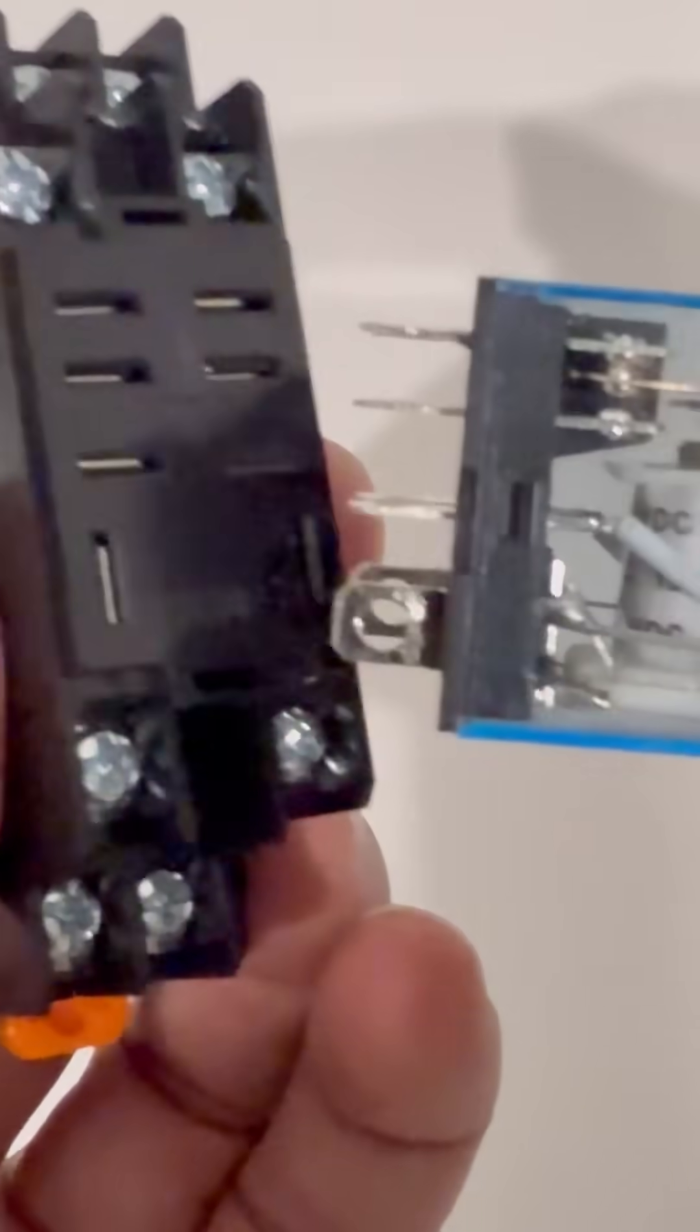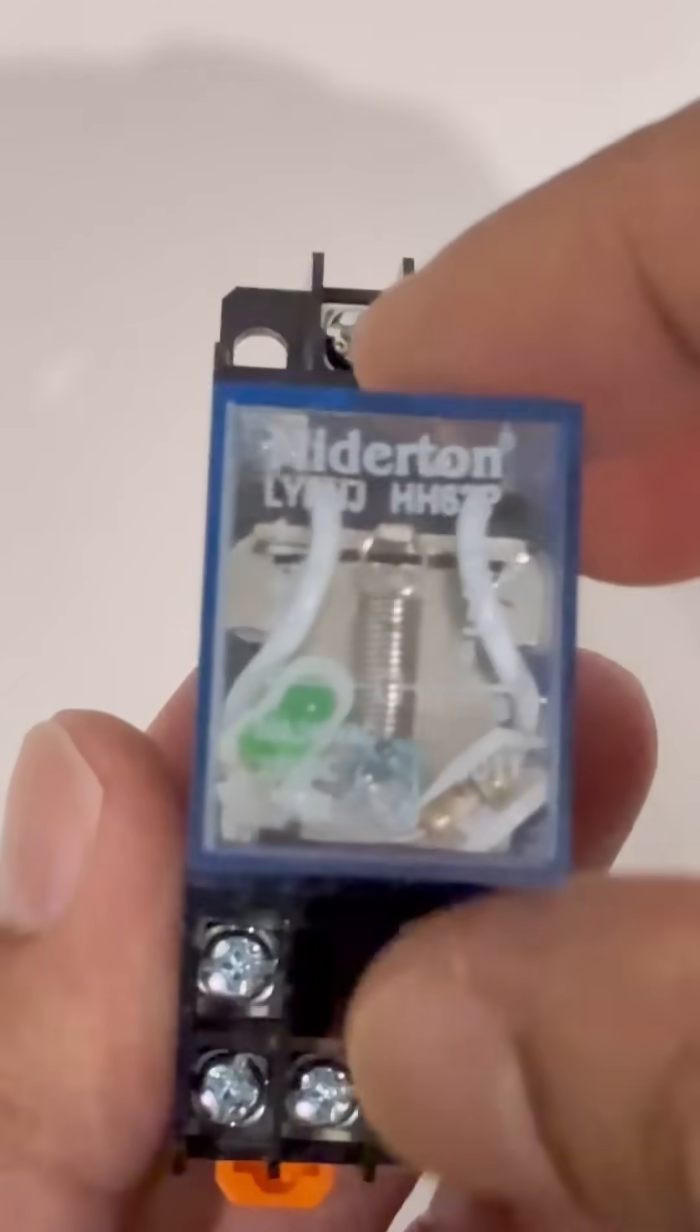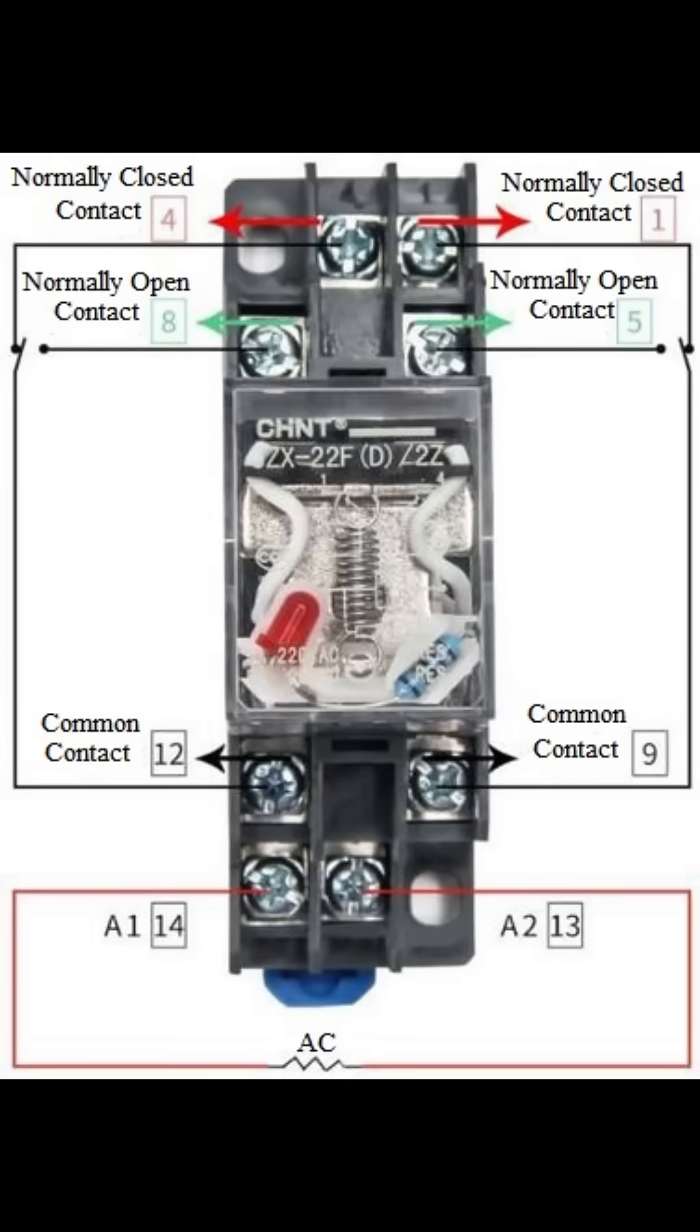It has eight pins. Two are for the coil that activates the relay, and the other six are for switching, including two common pins, two normally closed, and two normally open contacts.